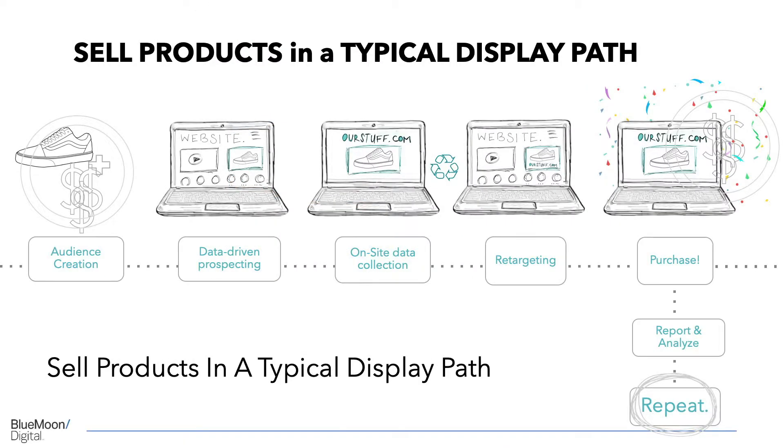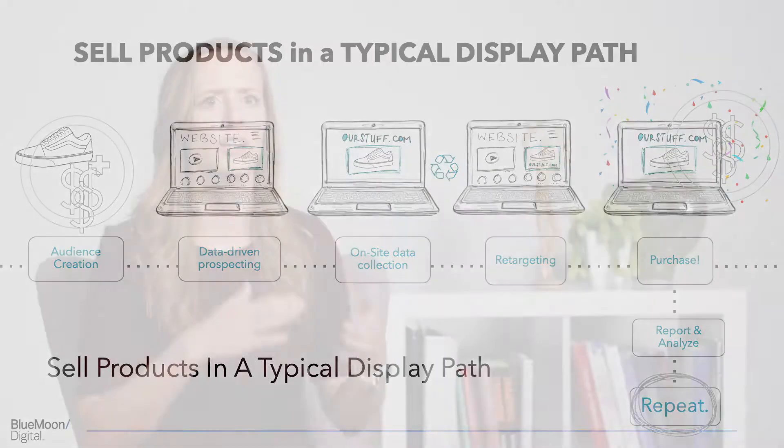In a typical display path we can see a linear type of approach: audience creation — figuring out we want to target, let's say, a skincare enthusiast — and then prospecting the skincare enthusiast throughout the internet. We drive them to our homepage, retarget them, then hopefully push them down the funnel and they purchase.